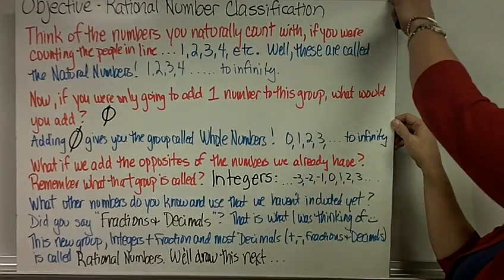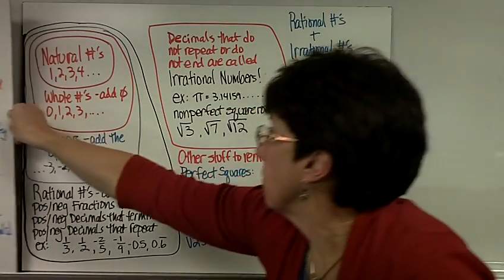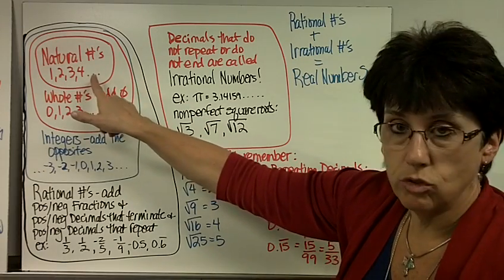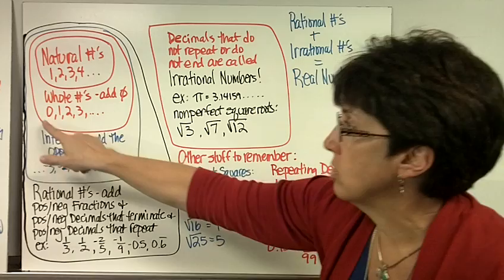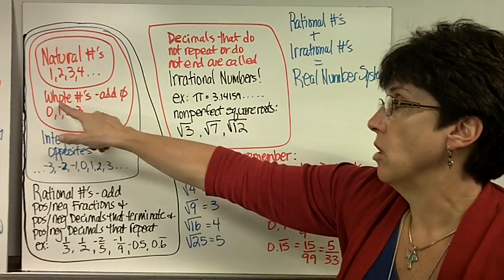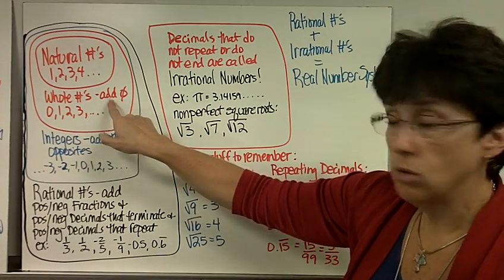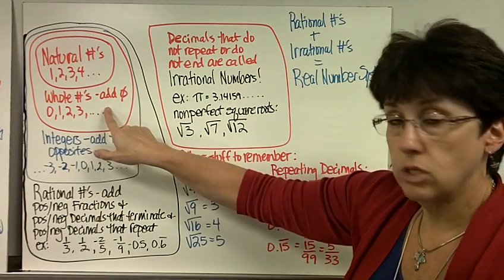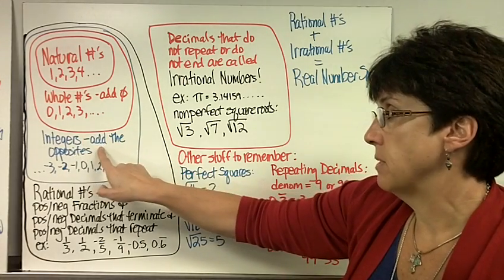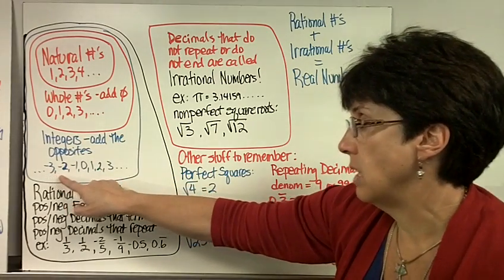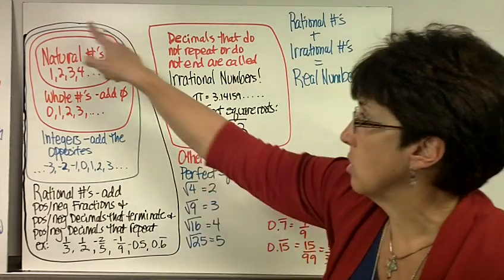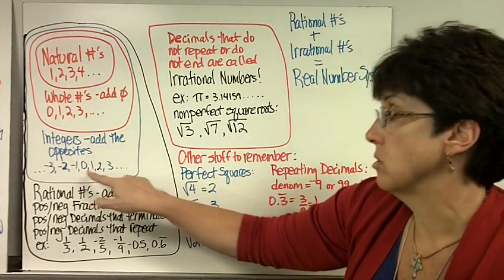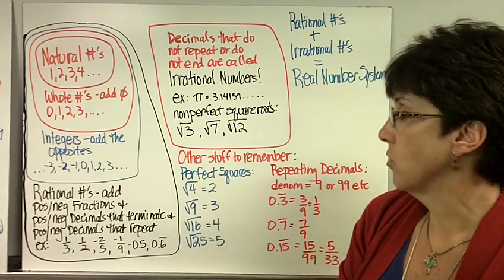Now we're going to draw it on the next page. Basically we have one little group — natural numbers: 1, 2, 3, 4. If you include all the natural numbers and just add a 0, they're whole numbers. So now you have 0, 1, 2, 3, 4. All the natural numbers are included in the whole numbers. Now you can add the opposites: negative 3, negative 2, negative 1, 0, 1, 2, 3. Notice it includes your natural numbers and your whole numbers — those are all included in integers.